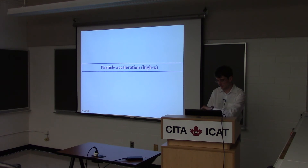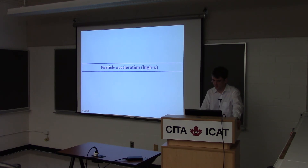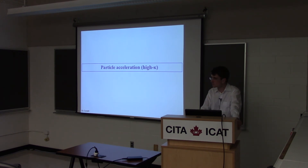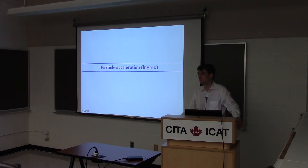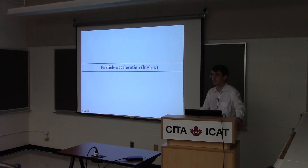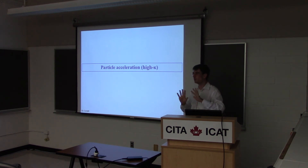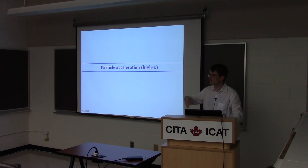I'm going to spend the last few minutes on the acceleration of particles, focusing on the high-multiplicity MHD-like solution, which is more appropriate for gamma-ray pulsars. The best way is to look at particle trajectories. I have all the information — I have all these particle trajectories, so I just need to see what they do. Once the magnetosphere is established in quasi-steady state, I take all the particles injected at the surface of the star at a given time and follow all of them to see what happens.